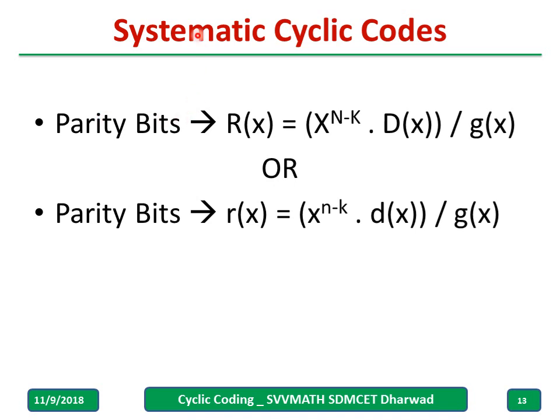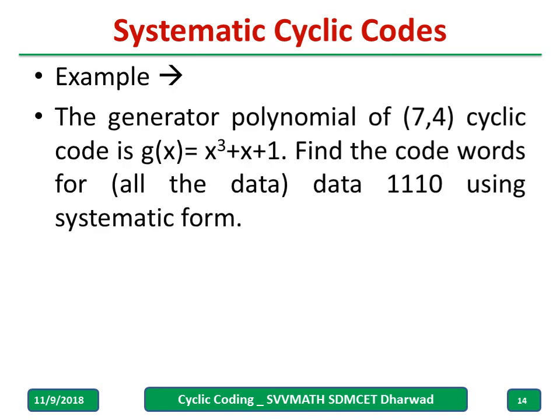And how to find out the parity bits in case of systematic cyclic code? This equation: Xⁿ⁻ᵏ · d(x) whole divided by g(x). In some books they write r(x) capital or small letter and d(x) also small, sometimes uppercase. In my PPT also we mix both. Both are same, no need to worry about capital D and small d. One example: take a generator polynomial is given, 7,4 cyclic code and data is also given. How to find out a systematic code for this?